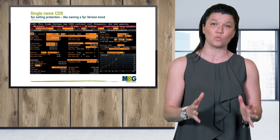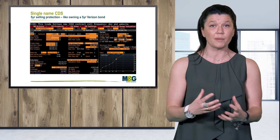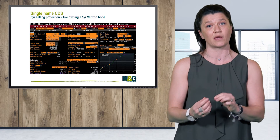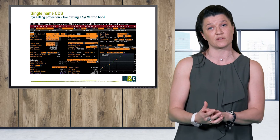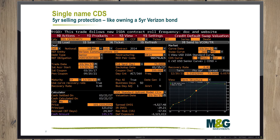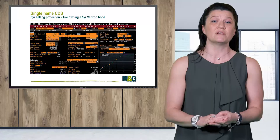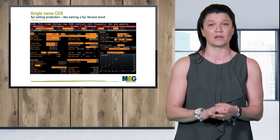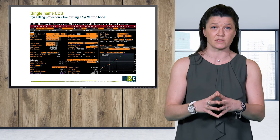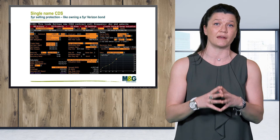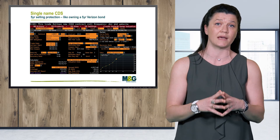Should spreads widen, we would be making a hypothetical loss against the market price, just as if we were holding the physical bonds. If the bond defaults, we owe the notional of the bond, similar to holding a physically defaulted bond. The risk and return dynamics are very similar. This is a cheaper, faster, and more efficient way of gaining credit risk in a fund.